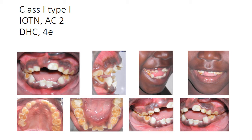In this case, the molar relationship is very difficult to determine in the fully erupted position because all the teeth are attrited. Attrition is present; it's called Class 1 molars. For the IOTN index, in the aesthetic component there is no open bite visible. We measure the open bite and based on the amount, we can classify this case as 4E for the dental health component.